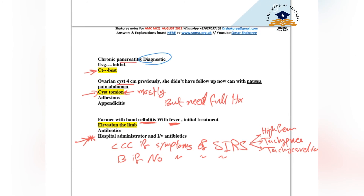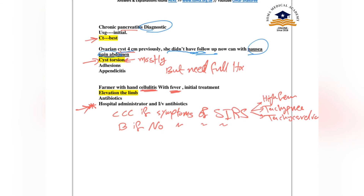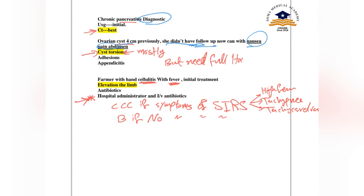An ovarian cyst of 4 cm with no prior follow-up, now presenting with nausea and acute abdominal pain — this is mostly a ruptured cyst, but we need the full history and full scenario to confirm.